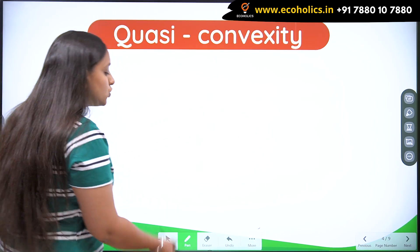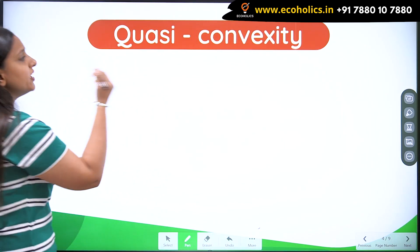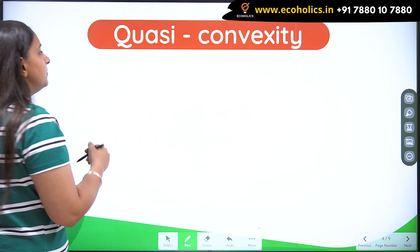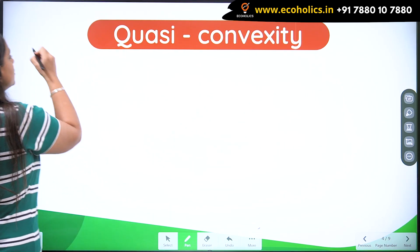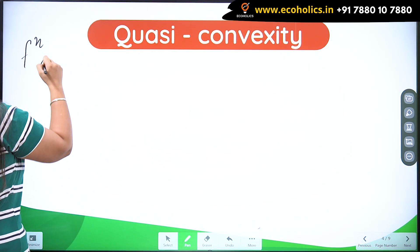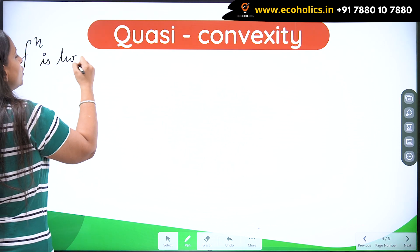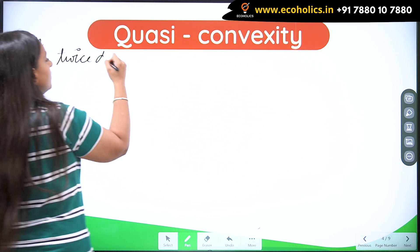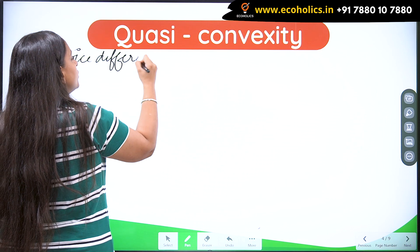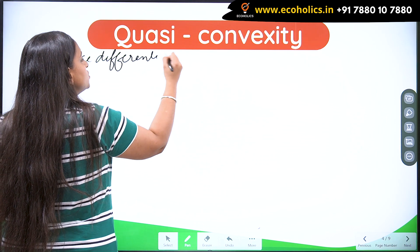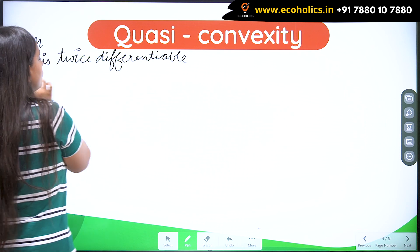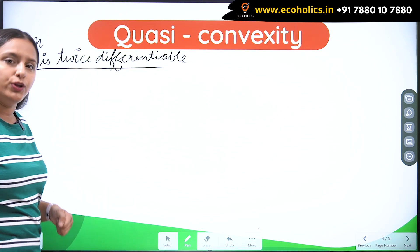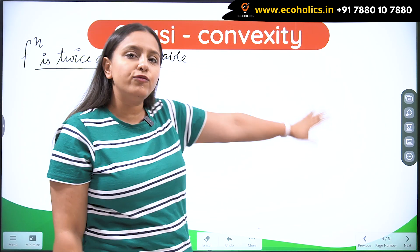So this mathematical method is going to help you with all those functions. One very important assumption is that the function should be twice differentiable. Only if the function is twice differentiable can I check quasi-convexity through this method; otherwise I cannot.